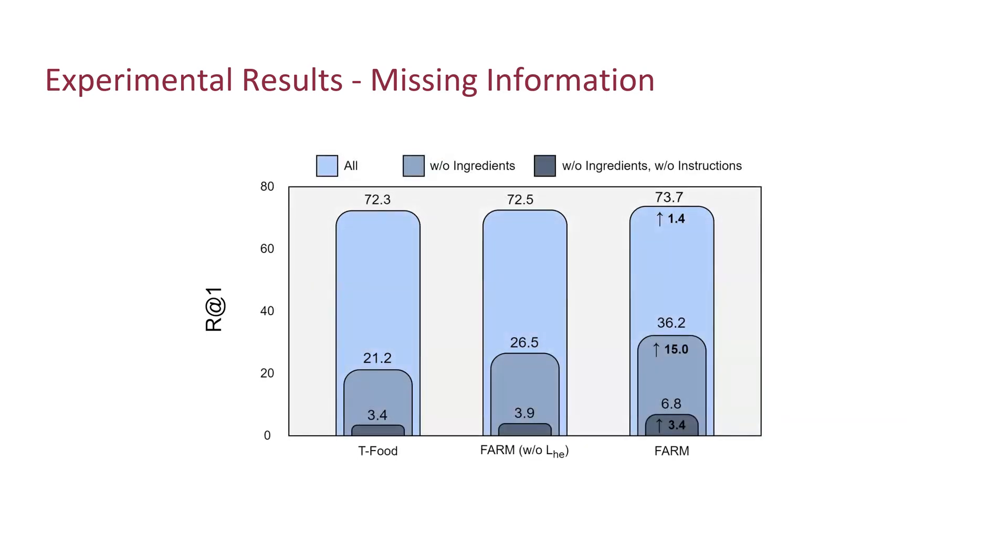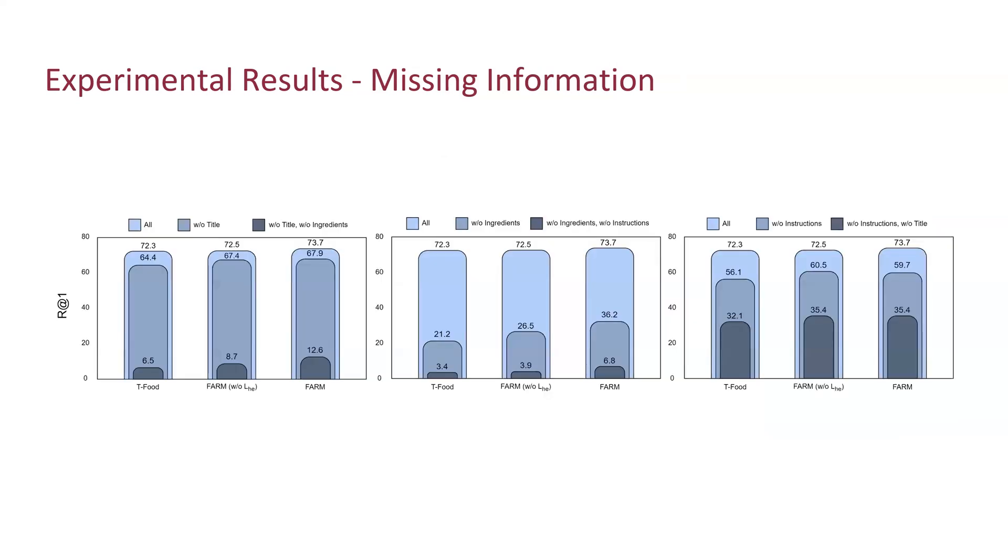And now this is the performance without both ingredients and instructions. We observed that FARM still performs twice as good as T-food. We observed this improvement consistently across all other components, proving the effectiveness of our proposed component-level alignment. As shown in this and previous slides, the title seems to have the least effect on the performance, while the ingredients seem to be most useful.